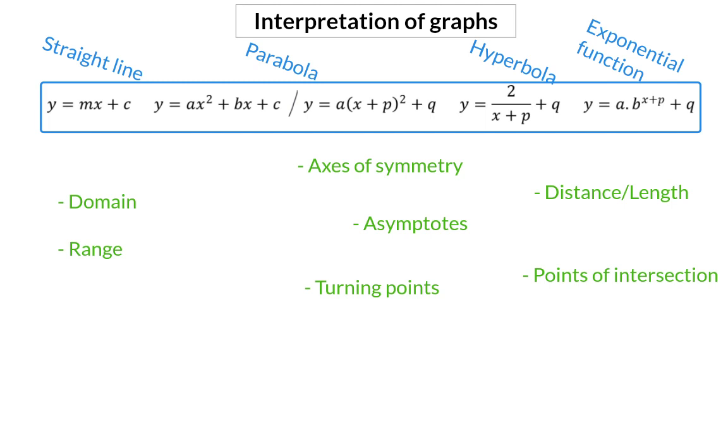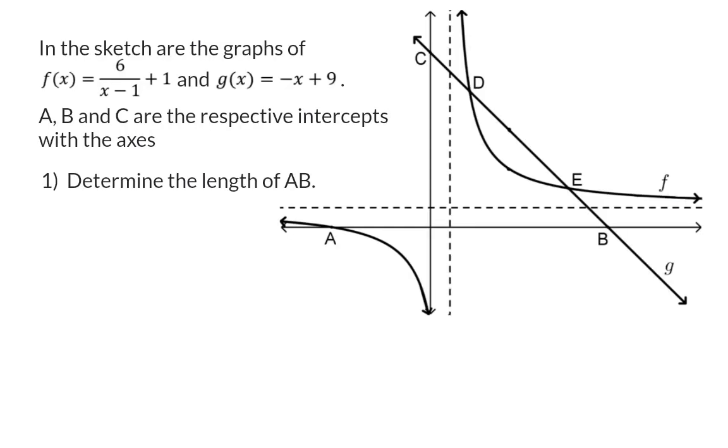Let's go and have a look at an example. In this sketch are the graphs of f, the hyperbola, and g, the straight line. A, B, and C are the respective intercepts with the axes.